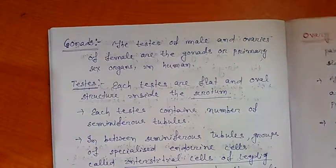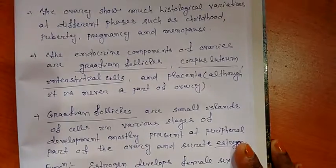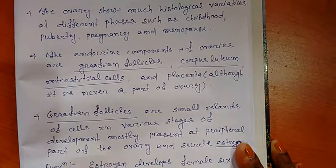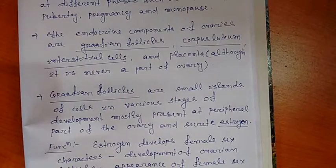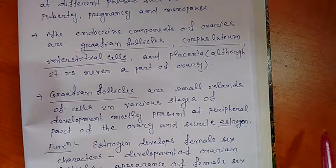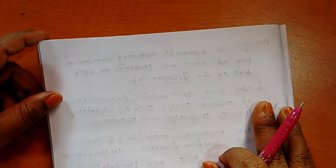Hello friends. In my last video, I discussed about the hormone secreted from the ovary. I only discussed the hormone estrogen, which is secreted from Graafian follicles. Now I am going to tell about the hormone progesterone, which is also secreted from ovarian cells.